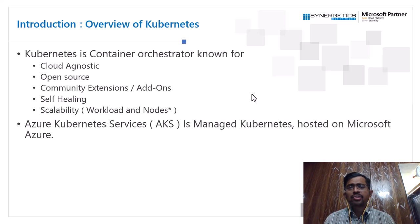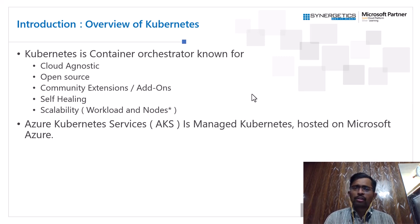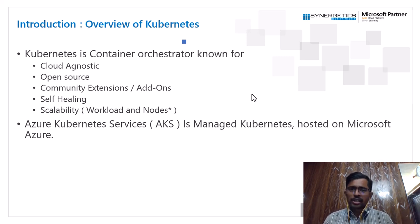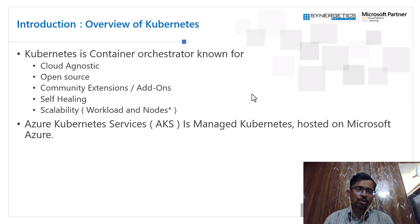Kubernetes is open source with a very large community constantly providing add-ons and extensions. You can explore these on artifacthub.io, which is like a search engine where you can find add-ons for monitoring, third-party extensions, and integrations — for example, add-ons that let your Kubernetes cluster consume Azure Blob, Azure File Share, or Amazon S3 as a volume.